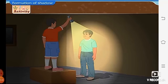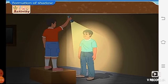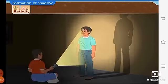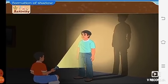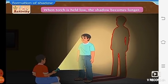Now, stand on the wooden block and hold the torch high. What do you see? When the torch is held high, the shadow falls near his feet. Now, sit down and hold the torch low. When the torch is held low, the shadow becomes longer.